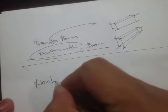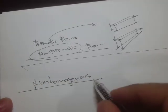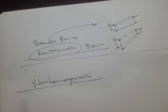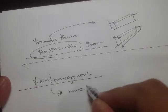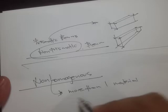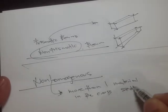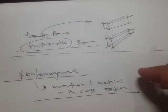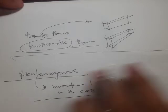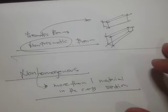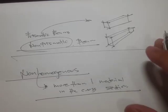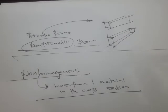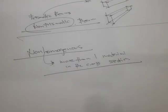Now let's move on to non-homogeneous beams. When we say non-homogeneous, it simply means there is a mix of materials — in our case, more than one material in the cross-section. We have already discussed non-homogeneous members in torsion and in axial loadings, so it is necessary to include this topic in our discussion of beams as well.